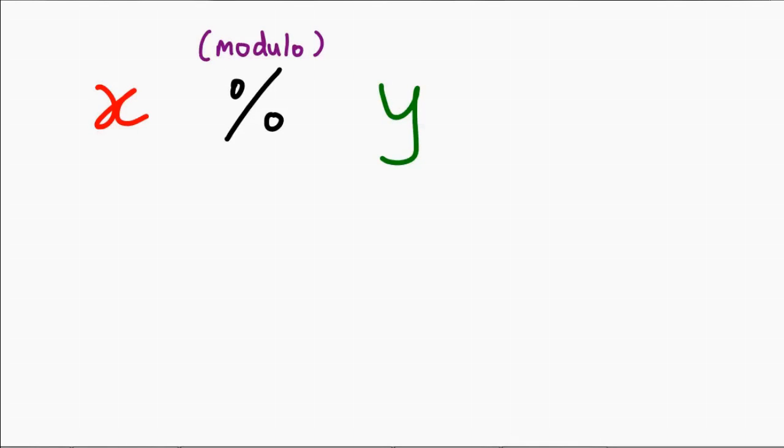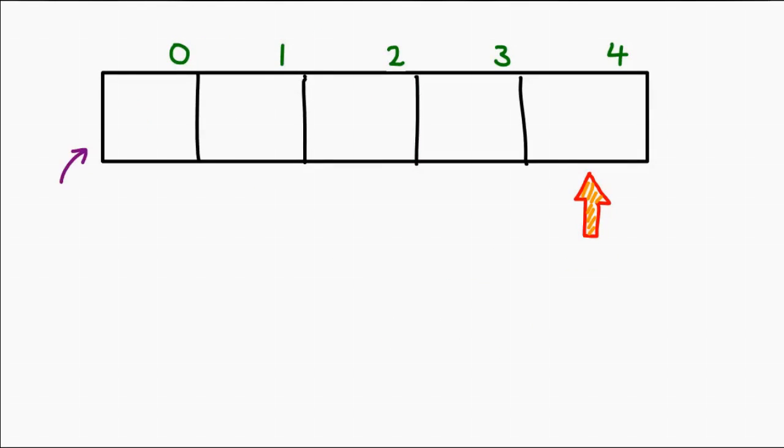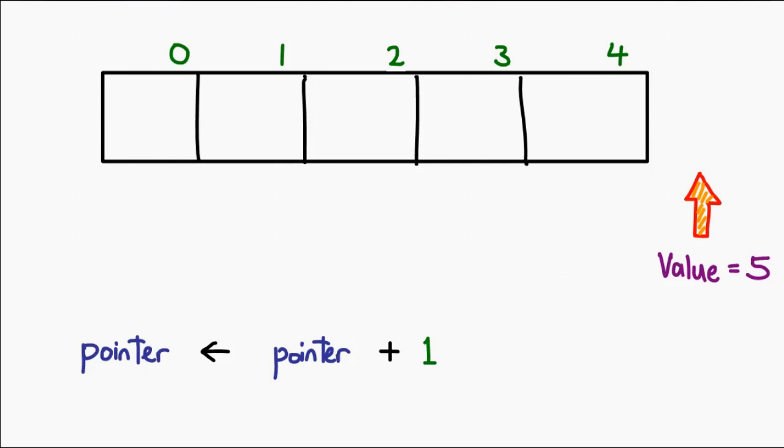The modulo function essentially means the remainder of a division. So now let's say I have an array of size 5, and I've got a pointer here that I want to increment, and as a result of that, actually push it back to the front of the array. This is a zero-index array, so essentially this pointer is pointing at position 4. Now, what happens when I add 1 to it? Well, its value becomes 5.